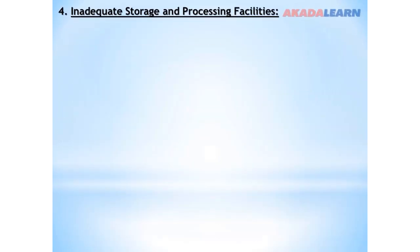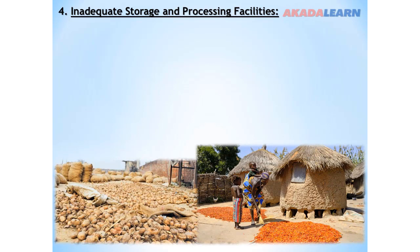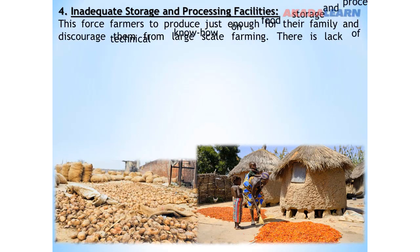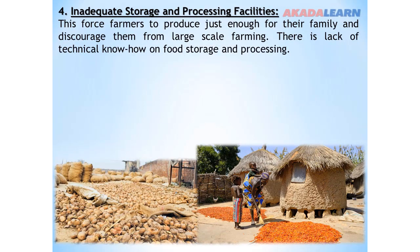Problem number four: Inadequate storage and processing facilities. These force farmers to produce just enough for their family and discourage them from large-scale farming. There is also a lack of technical know-how on food storage and processing.